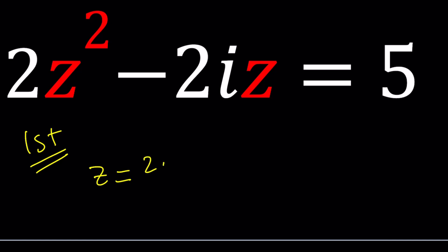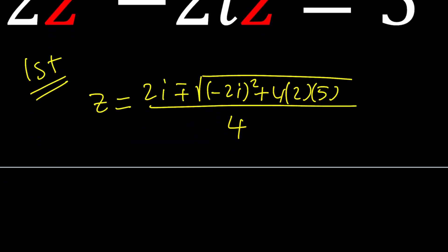z is going to be negative b, 2i, plus minus the square root of b squared. So you get negative 2i squared, minus 4 times a times c. But when you bring the c over here, it's going to be minus 5. Therefore, you need to change this to a plus sign so that you get the correct sign. And divide all of that by 2a, which is 4.